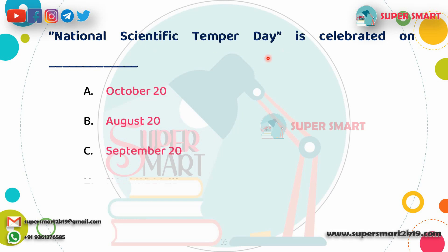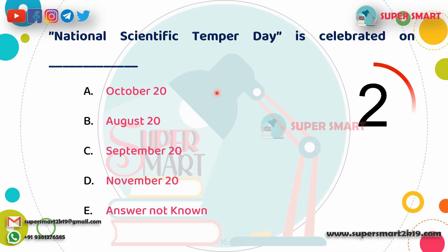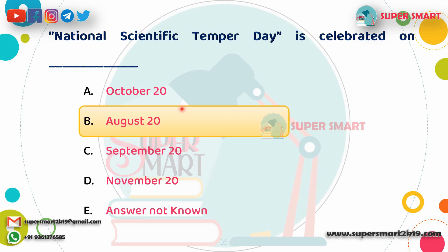Next question: What date do we celebrate National Science Day? The options are October 20th, August 20th, September 20th, or November 20th. The answer is August 20th.